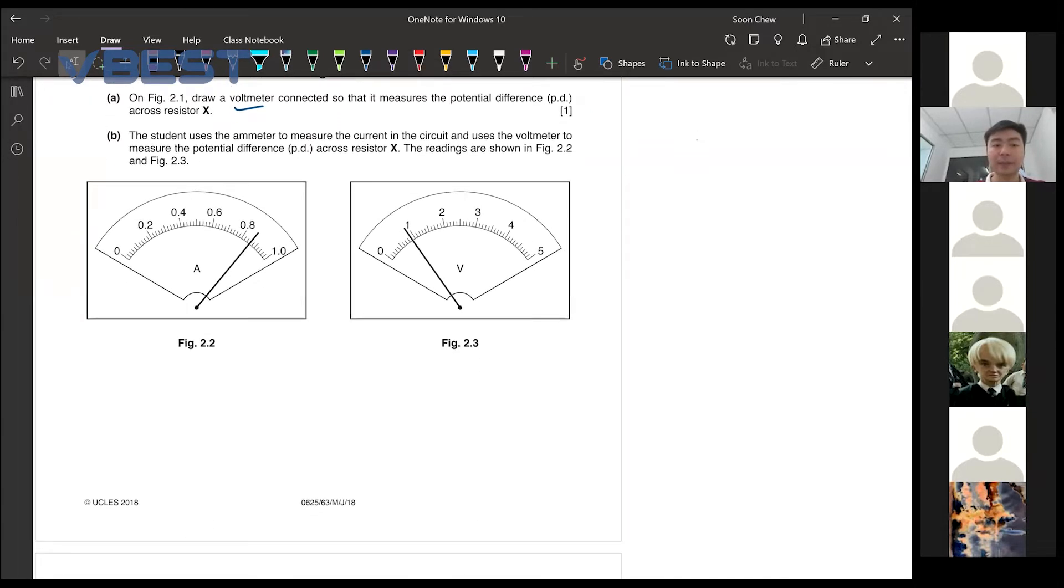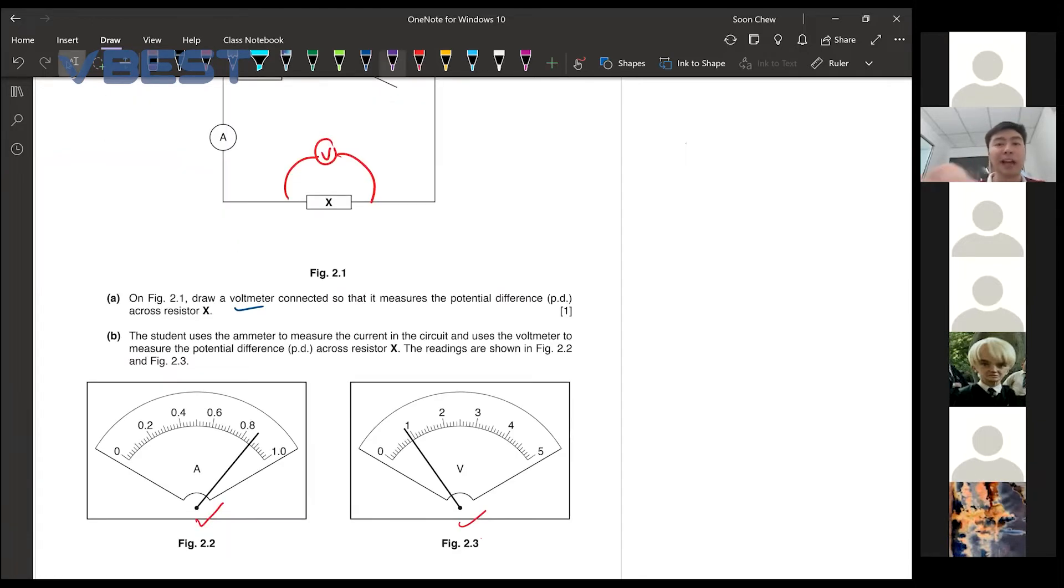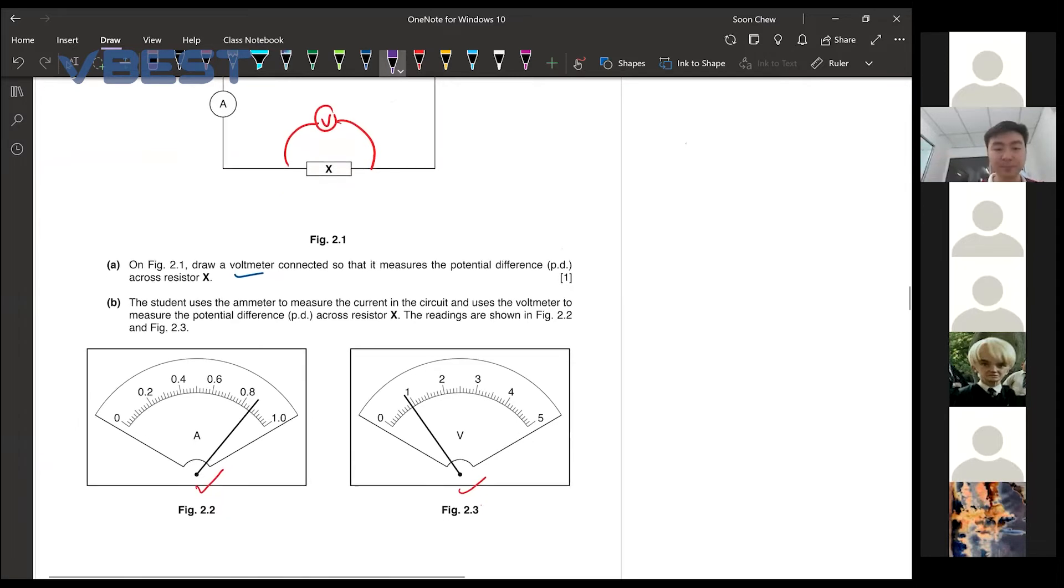The student carried out the experiment. He managed to measure the current and the voltage in this way. Need ruler for the wire, don't need. If you want it neater, you just use ruler. But they won't minus mark if you didn't use this. Alright, so yeah.